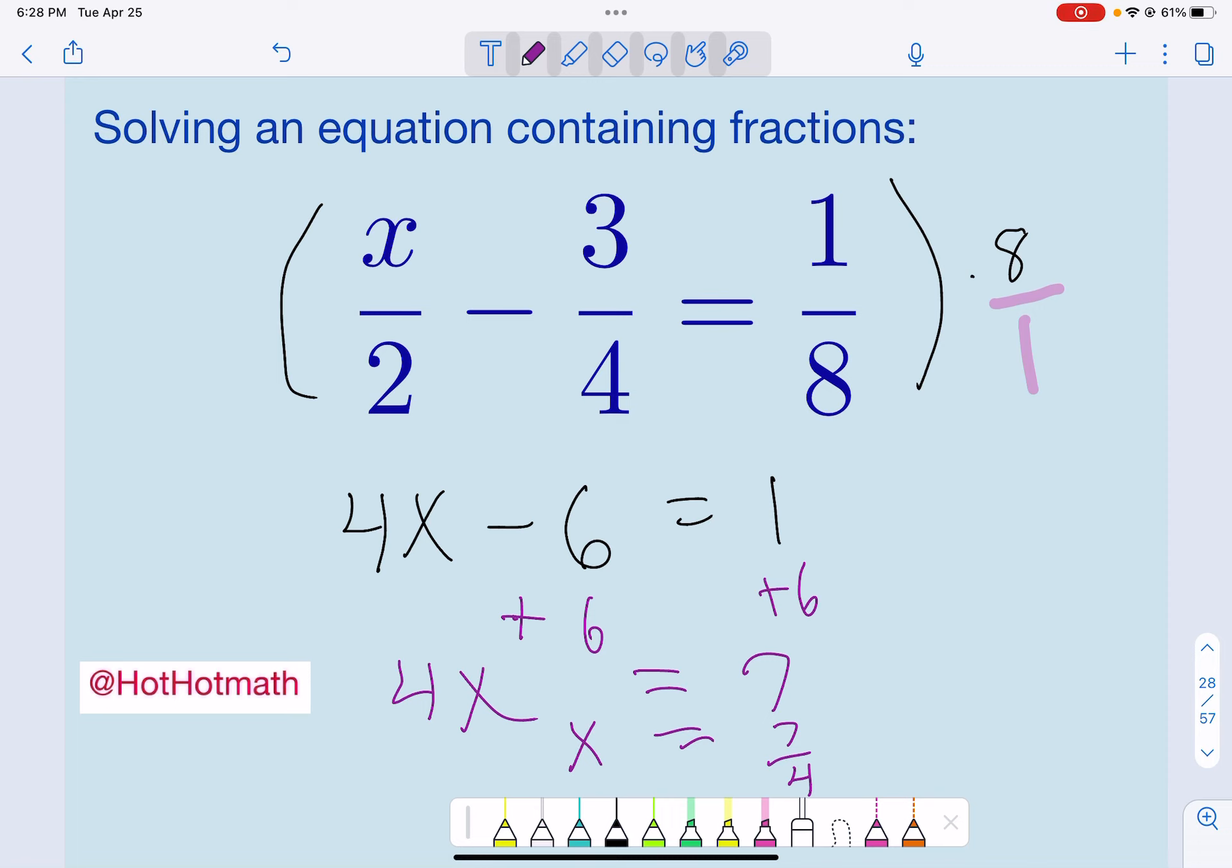They have nothing in common. Now, you can make 7 fourths the mixed number 1 and 3 fourths. In algebra, that is not necessarily helpful unless you're maybe going to divide. So stopping at 7 fourths might be a good place for you to stop.